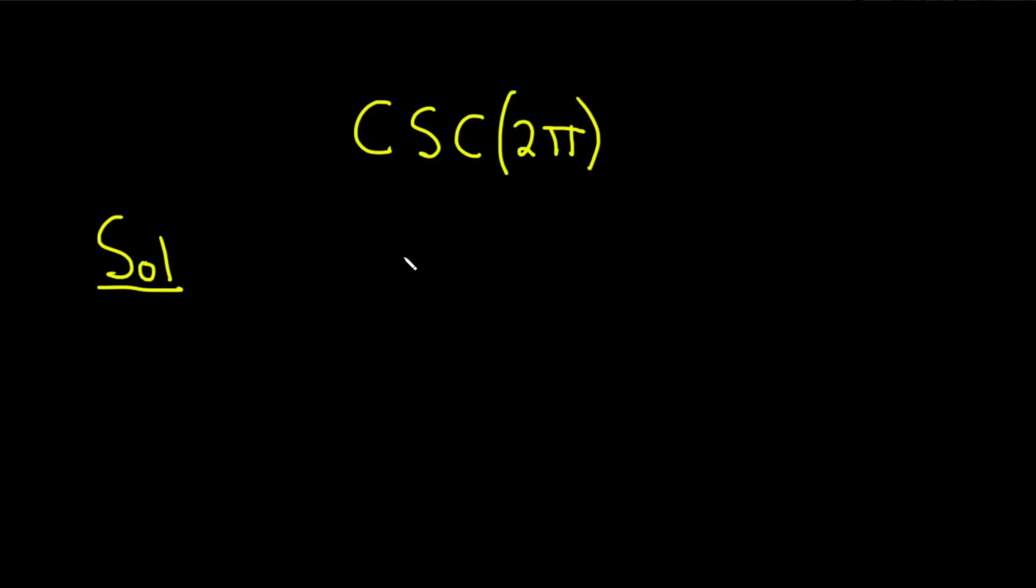The first thing we should realize is that the cosecant of x is equal to 1 over the sine of x. So csc(x) equals 1 over sin(x).